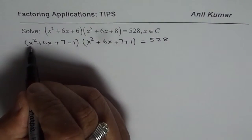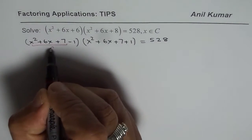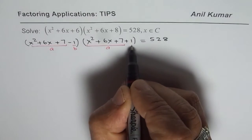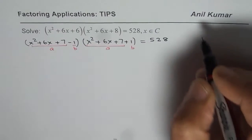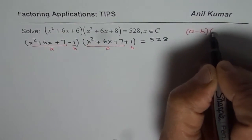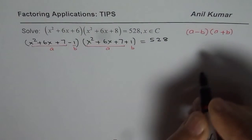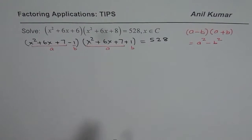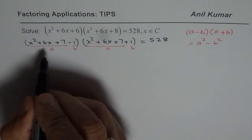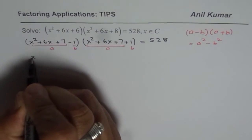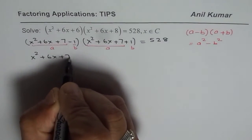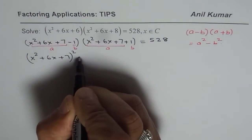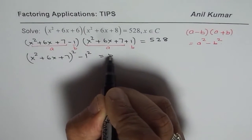Now, let us say this term is a and this is b. So we have a minus b times a plus b, which equals a squared minus b squared. That is the strategy. So we write this as a squared, which in our case is x squared plus 6x plus 7, whole squared, minus b squared — b is 1 — so minus 1 squared, equals 528.